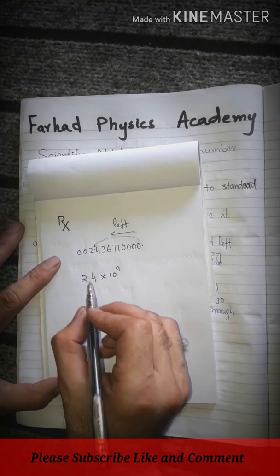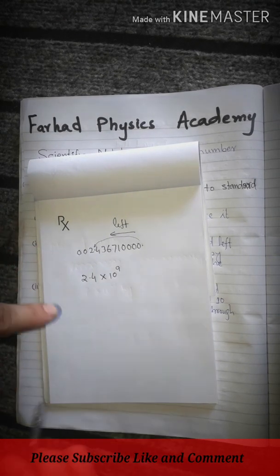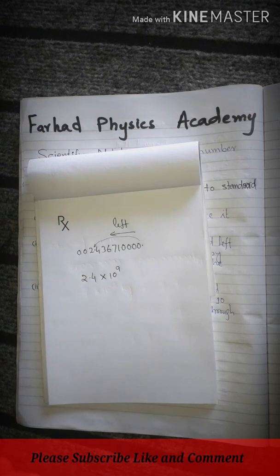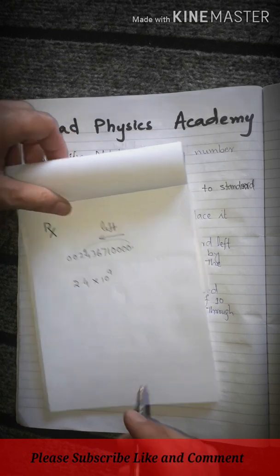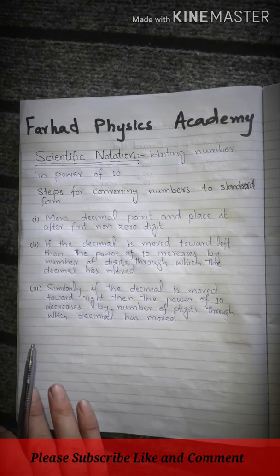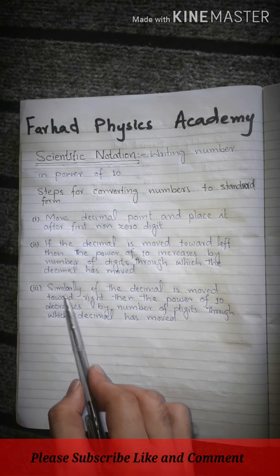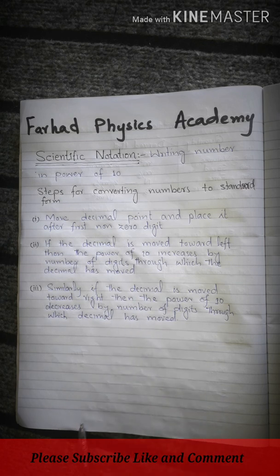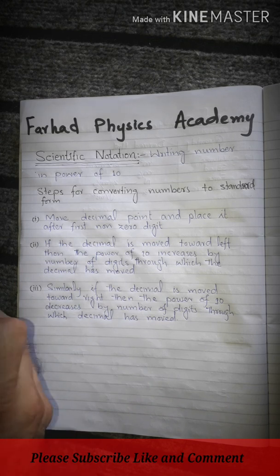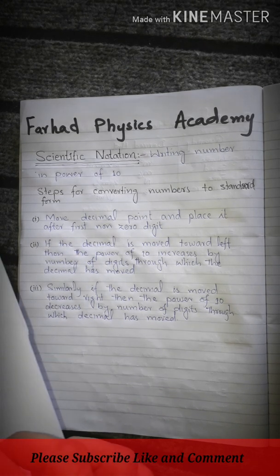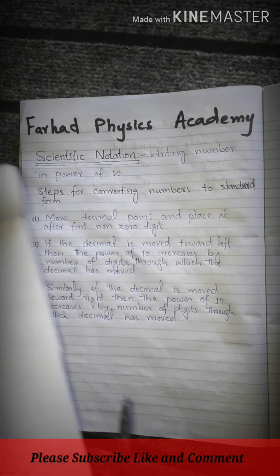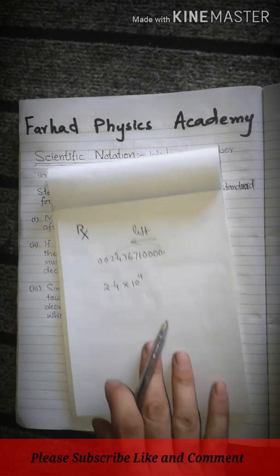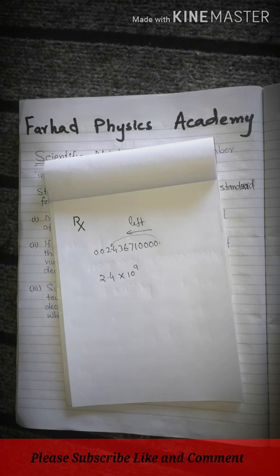If the decimal is moved toward right, then the power of 10 decreases by number of digits through which the decimal has moved. If the decimal moves right, the power will be less. So if moving left increases the power, moving right decreases it.